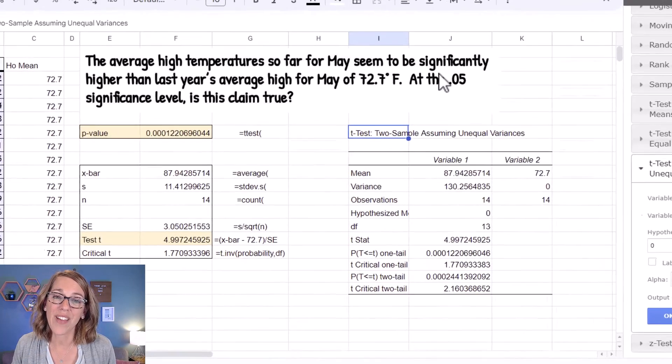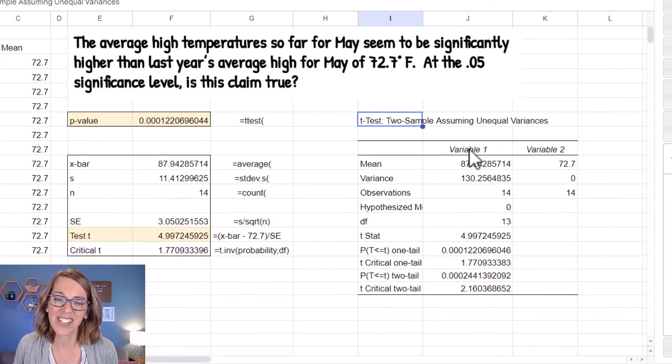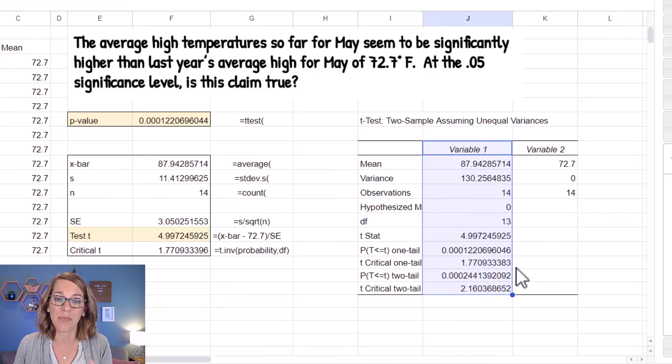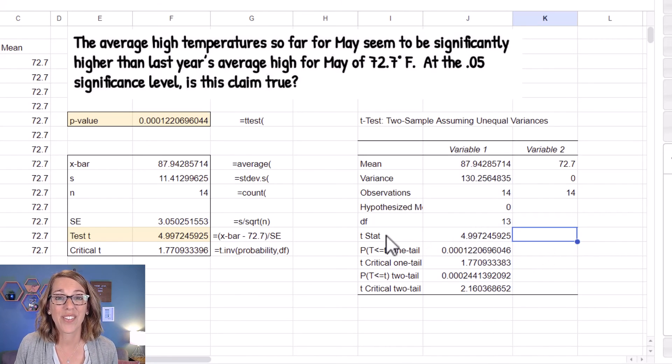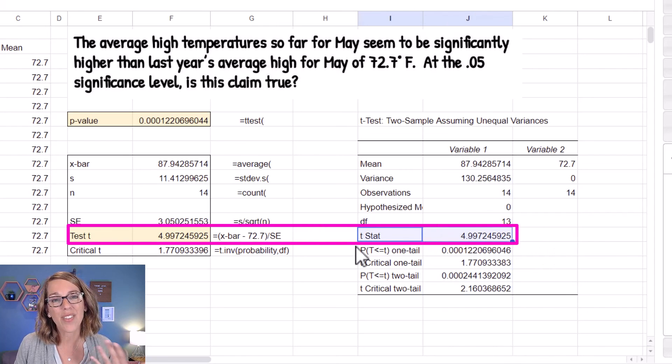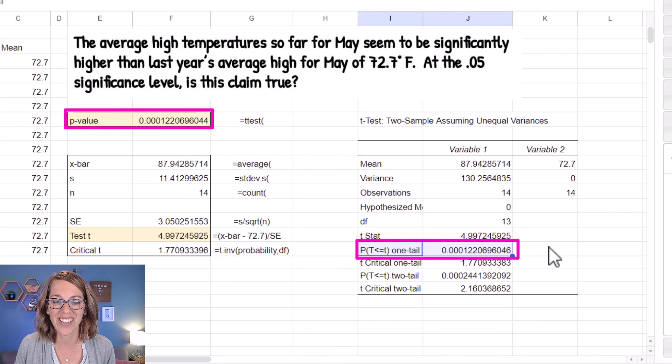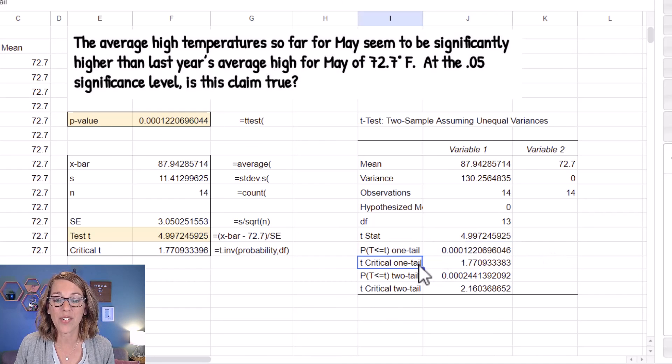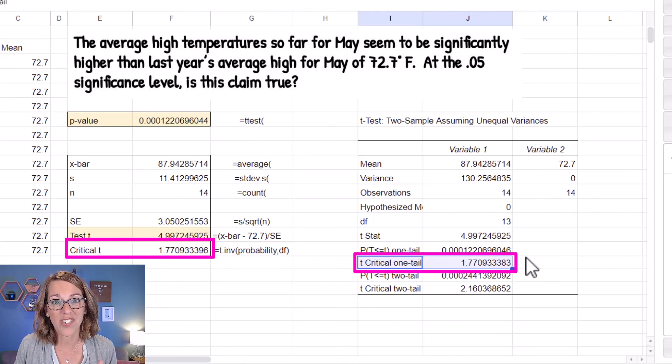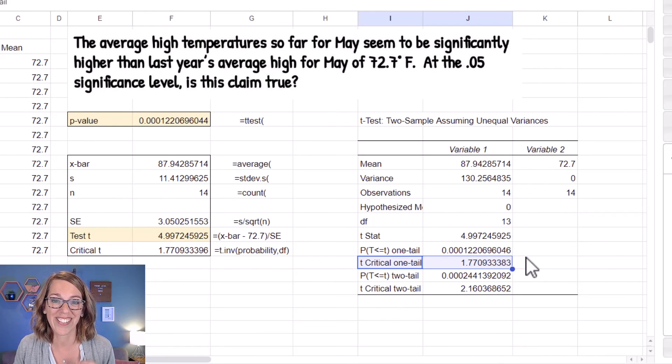Now I've got all of the values that I need for my test. Since this truly is just a one sample test, I'm just concerned with my variable one results. And you'll notice that we've got a test t value that matches what we found before. This is a one tail test. So we're just concerned with the p value that goes along with a one tail test. And it also gives me that critical value that matches my one tail test.